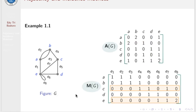The incidence matrix of this graph will be 5×8, shown on the right. Look at vertex C in the graph — this vertex is only incident with edges E4, E5, and E7. In the corresponding row, we have 1 only in columns E4, E5, and E7.